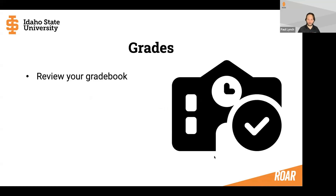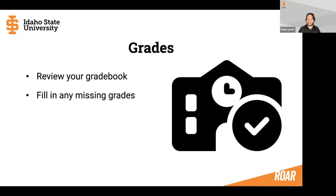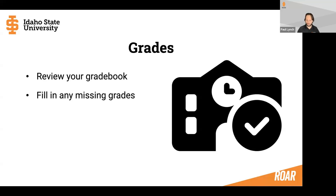First, looking at grades. We want to make sure we are reviewing our gradebook — specifically, does everything look correct? As you're reviewing your gradebook, you may also notice there could be some missing grades. Maybe there's a lingering assignment we forgot to grade, or maybe there's just some assignments that weren't submitted. We want to make sure we're addressing those — grading any late submissions if you accept those, or entering zeros in the gradebook for missing items.